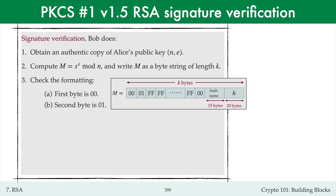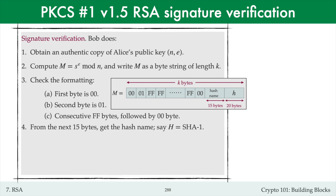The second leftmost byte should be 01, otherwise the signature is rejected. The 01 byte should be followed by a string of consecutive ff bytes, followed by a 00 byte. If not, then the signature is rejected. Then, from the next 15 bytes, Bob obtains the name of the hash function — let's suppose this is SHA-1. Since SHA-1 produces hash values that are 20 bytes in length, Bob then extracts little h from the next 20 bytes. Bob then verifies that little h is the hash of the message. He computes H-prime by hashing M with SHA-1 and accepts the signature if and only if H equals H-prime. This is how signature verification was described in the PKCS number 1 version 1.5 standard.